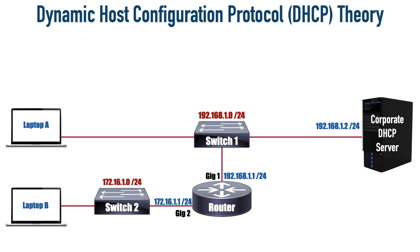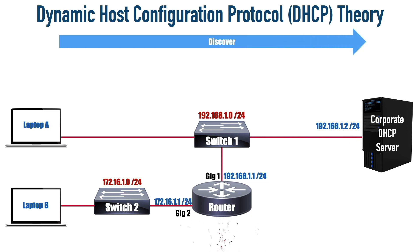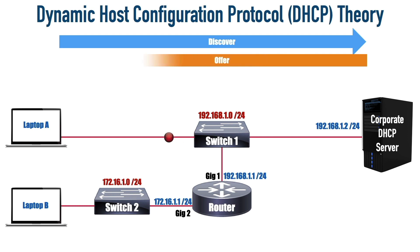Now let's consider a couple of DHCP attacks, but first let's review the operation of DHCP. DHCP allows an endpoint like a laptop or a smartphone to dynamically obtain an IP address and associated information such as a subnet mask, a default gateway, and a DNS server. When a device comes up — consider laptop A on screen — it sends out a discover broadcast saying 'hey, are there any DHCP servers out there?' and if there are DHCP servers on that subnet, they will respond with an offer message.